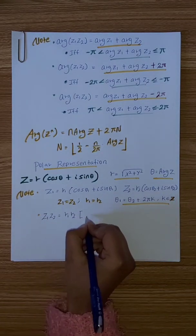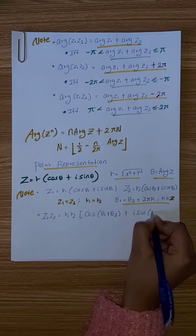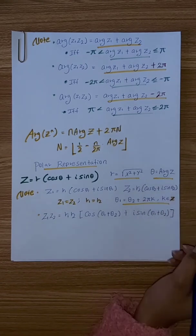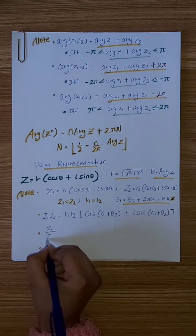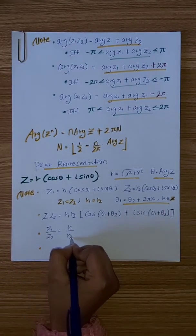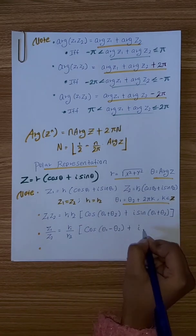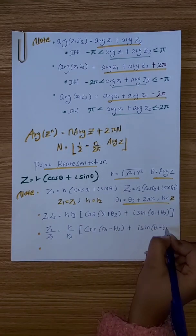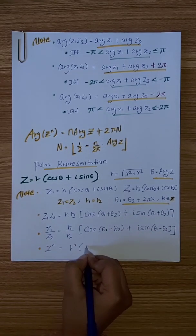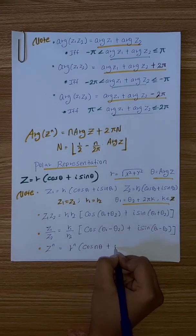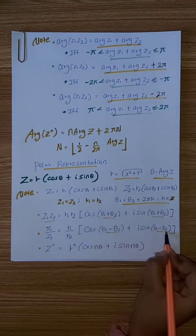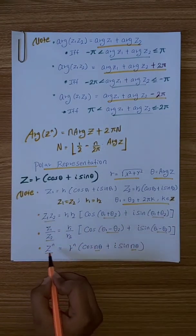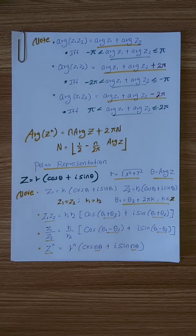The multiplication of complex numbers in polar form: z1 times z2 equals r1 times r2 times cosine of theta1 plus theta2, plus i sine of theta1 plus theta2. For division, the angle becomes theta1 minus theta2. For powers, the angle is also theta1 minus theta2.